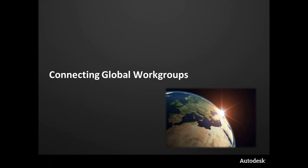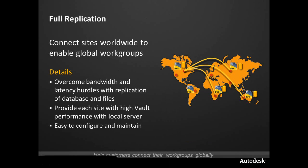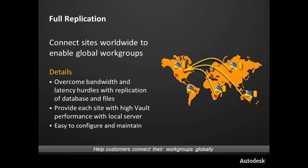Let's talk about global workgroups. The full replication model essentially overcomes bandwidth issues and latency issues by connecting the globe, connecting all of these workgroups and worksites with one another, and behind the scenes, balancing out and synchronizing files and synchronizing metadata as necessary.